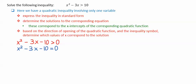We'll then look at the corresponding equation, x-squared minus 3x minus 10 equals zero.